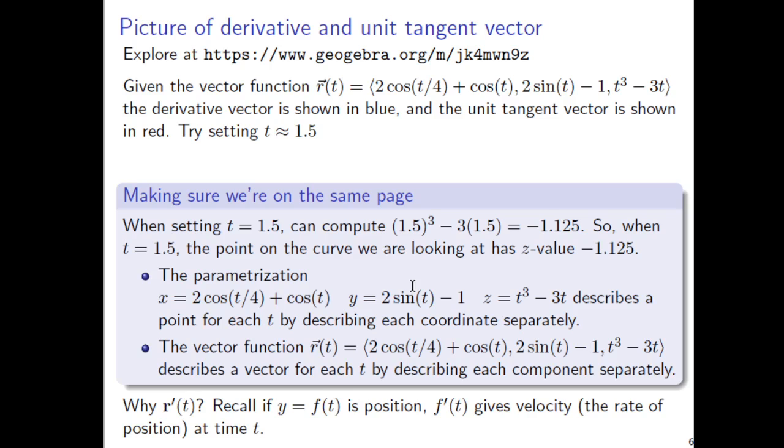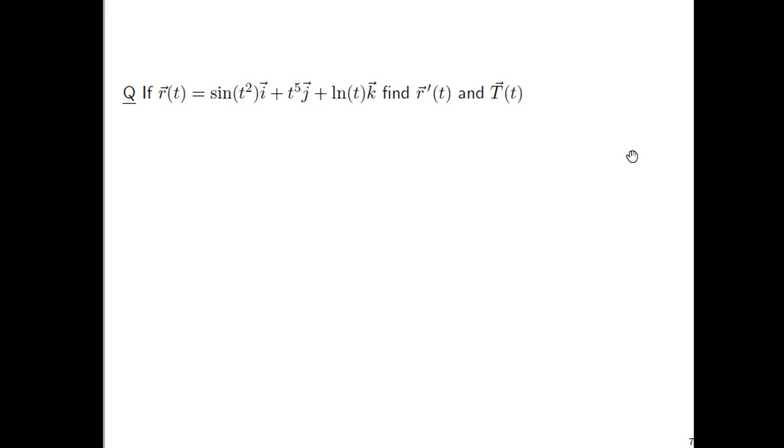Okay, so why r prime of t? Well, if you recall back from calc 1, if you have y equals f(t) describing position, then f'(t) describes the velocity. That's the rate of change of the position at time t. And so the same happens here. If you have a bug that has position r(t), then r'(t) would give the velocity.